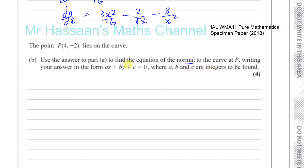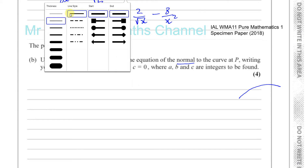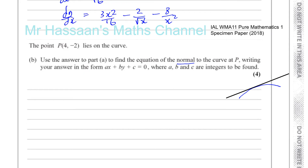The normal to a curve is different from a tangent. A tangent is a straight line that just brushes the curve without cutting through it — it has the same gradient as the curve at that particular point. A normal to a curve is the line perpendicular to the tangent at that point. So the tangent has the same gradient as the curve, and the normal is perpendicular to it.